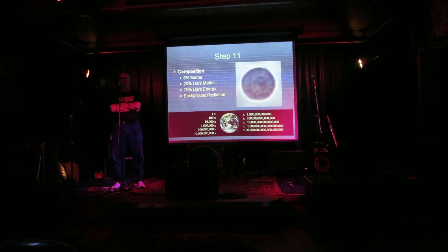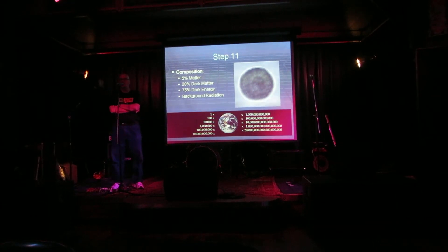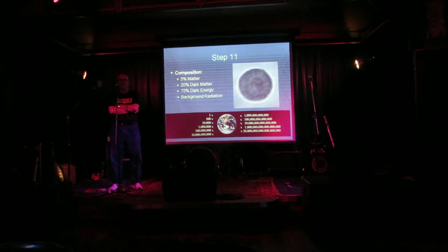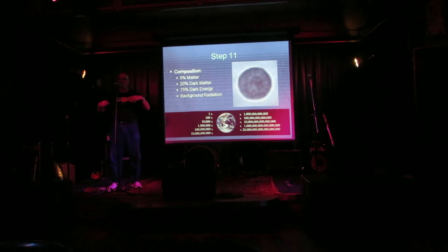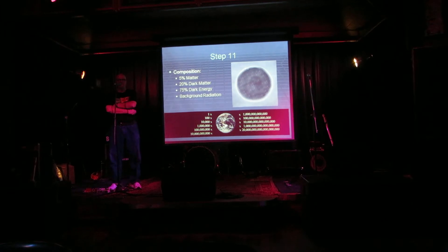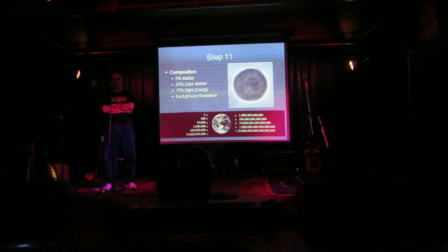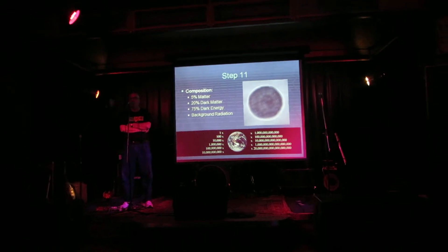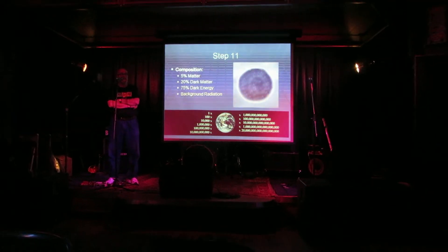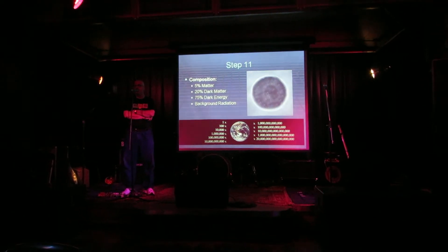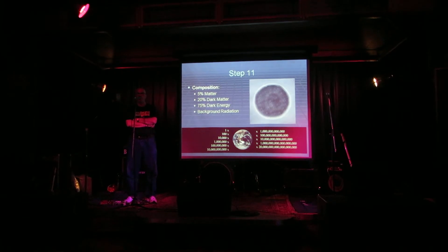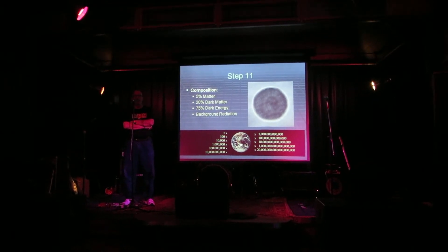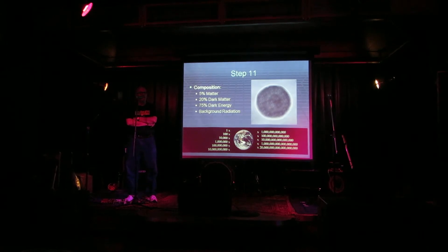20% of it is dark matter. What is dark matter? It's the same thing as regular matter, only it's so far away and we don't have any direct evidence — we just know through inference that it does exist. There's four times as much physical parts of the universe that we don't see but know is there. 75% is dark energy — that's the stuff that keeps the whole thing going, keeps it all together. And there are trace amounts of background radiation.